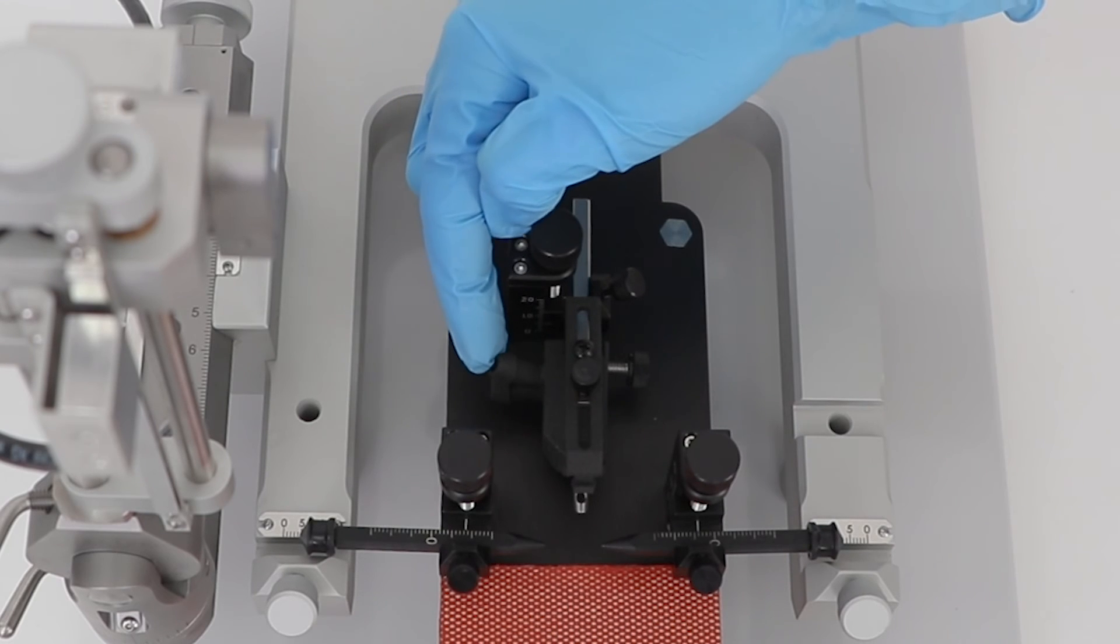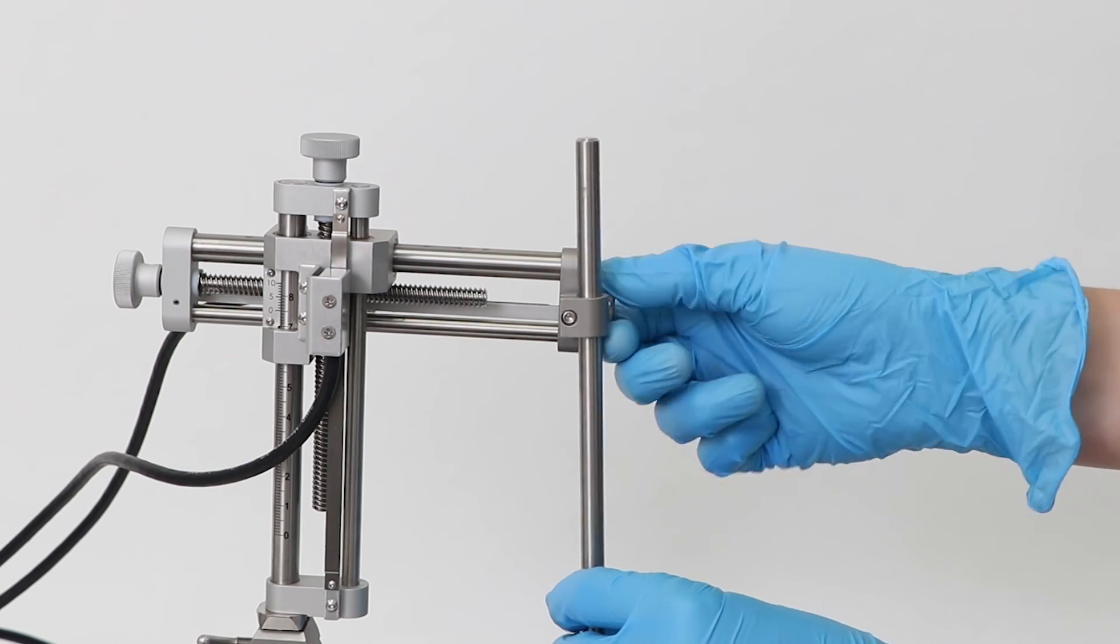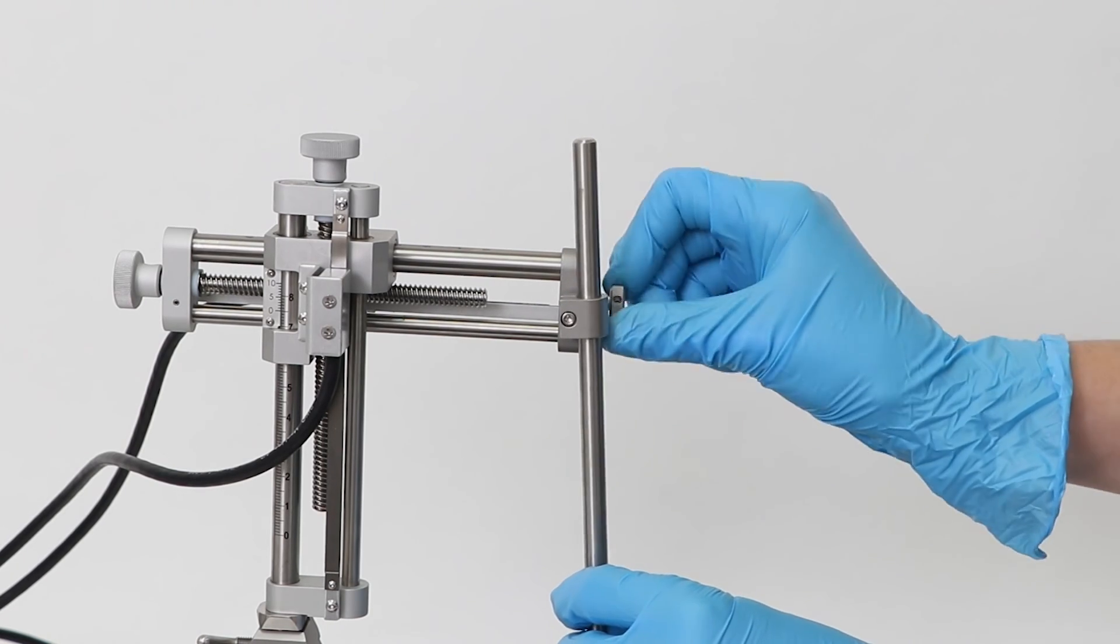Connect your anesthesia line to the back of the mask block. The manipulators should come with the probe holder already attached. If you need to remove it, loosen the screws here and set it aside.